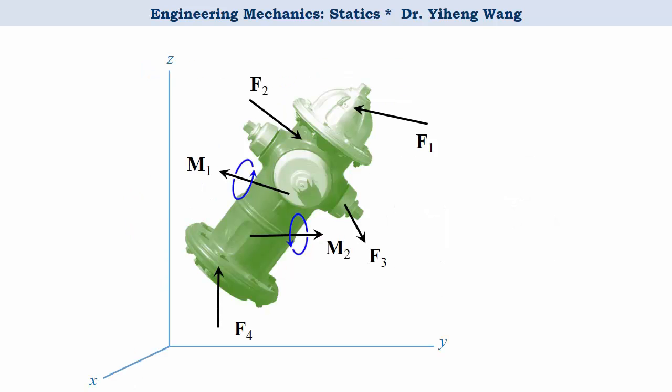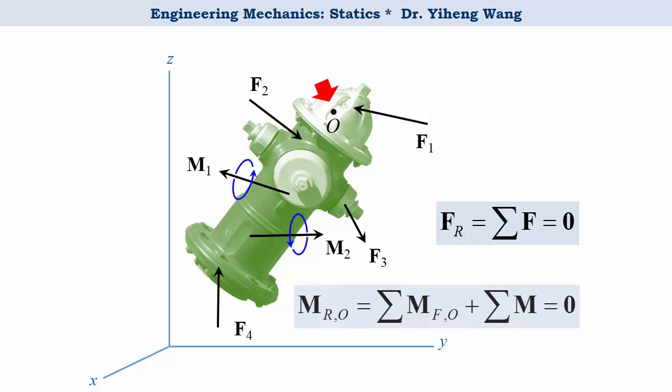Therefore, for a rigid body that is subjected to multiple forces and couple moments, the first condition for equilibrium is the same as particle equilibrium, that the resultant external force acting on the body must be zero. Then the resultant moment summarized about any arbitrary point O must also be zero. This resultant moment includes both the total moment caused by the forces and the total couple moments. Note that both of these equations are vector equations.